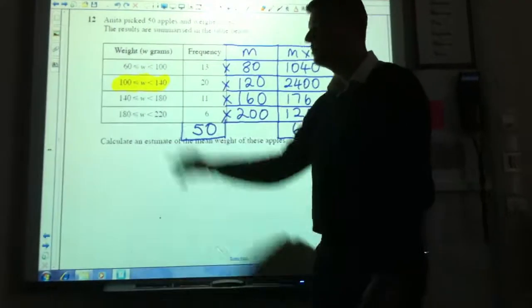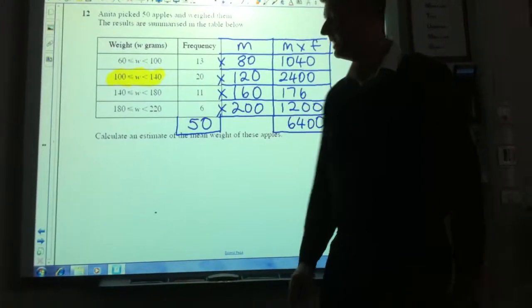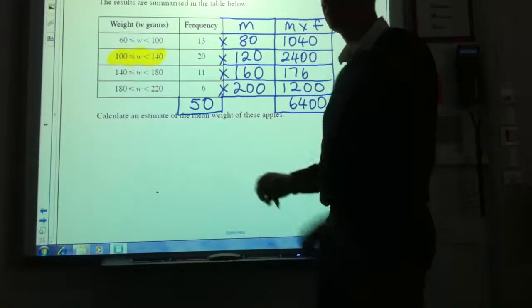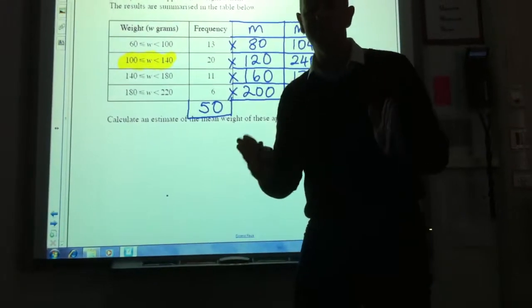The thing we can be asked to do with this table is to work out the median group. Now there are 50 apples in this table, so the middle apple would be the 25th apple.